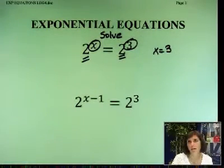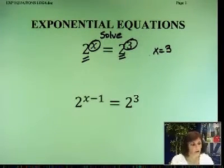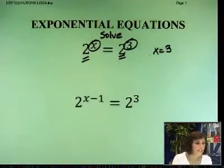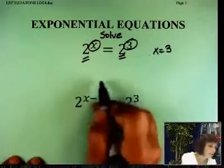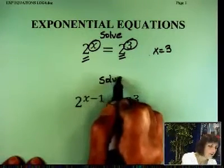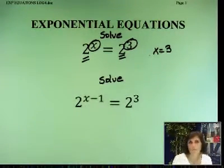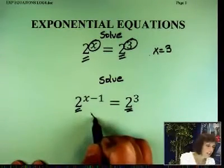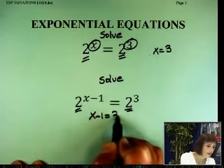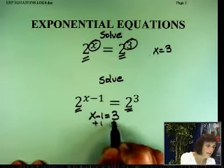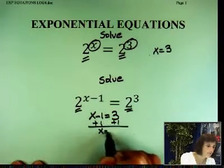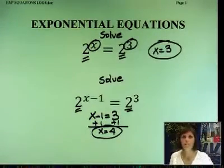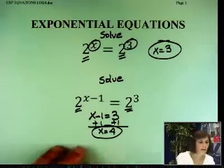And you can also actually go and check it if you want. If I put 3 to the third, x equals 2 to the third. Easy enough. Here's another question. Solve 2 to the x minus 1 equals 2 to the third. If the bases match, that means the exponents have to match. x minus 1 equals 3. Add 1. That means x equals 4.